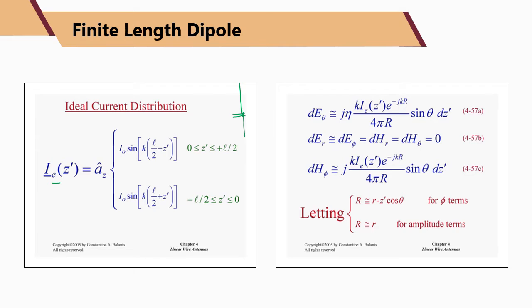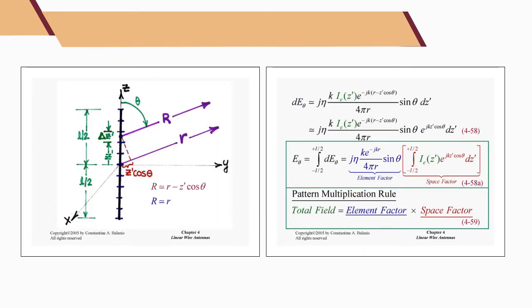The electric and magnetic components of the finite length dipole antenna are given by this equation, where R equals R minus z cosine theta for the first term. The capital R in the denominator represents the amplitude term, which can be replaced by small letter r. The small r here represents the phase equal to R minus z cosine theta, while small letter r represents the magnitude.